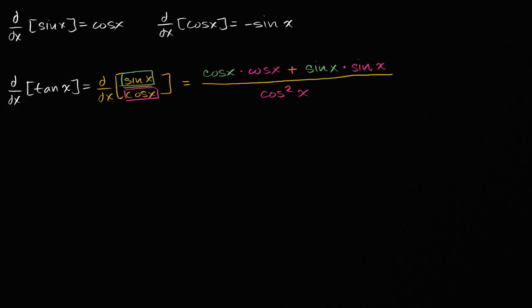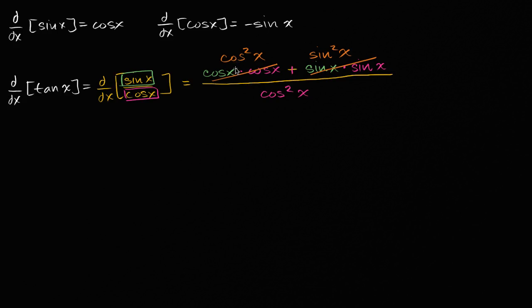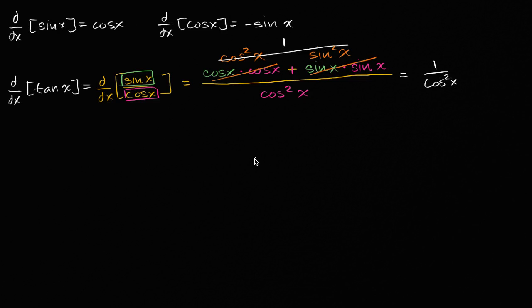Now what is this? Well, the numerator is cosine squared of x plus sine squared of x. We know from the Pythagorean identity — which comes from the unit circle definition — that cosine squared of x plus sine squared of x equals one. So all of this equals one, and we end up with one over cosine squared x, which is the same thing as secant squared of x.